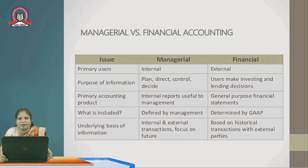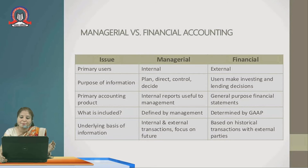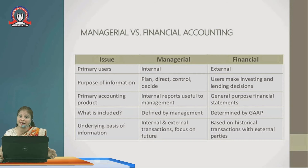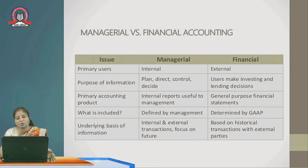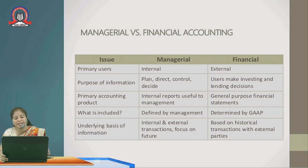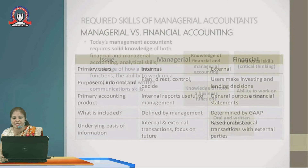The difference between management and financial accounting: management accounting is used internally, while financial accounting is used externally by the public. Management accounting is used to plan, direct, control, and decide, whereas financial accounting is used for investing purposes or lending decisions. Internal reports are useful to management in management accounting, whereas general purpose financial statements are used in financial accounting, which is governed by GAAP. Management accounting focuses on the future, while financial accounting focuses on historical transactions already taken place.